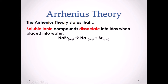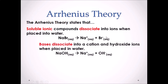The Arrhenius theory states that soluble ionic compounds dissociate into ions when placed in water — something we've seen before. For example, sodium bromide, which is soluble in water, will break apart into its ions: Na+ and Br−. Bases dissociate into a cation and hydroxide ions when placed in water.